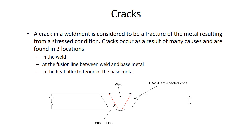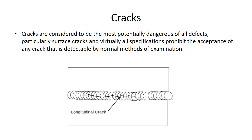A crack in a weldment is considered to be a fracture of the metal resulting from a stress condition. Cracks occur as the result of many causes and are found in three locations: in the weld, at the fusion line between the weld and the base metal, and in the heat affected zone of the base metal. The heat affected zone is the portion of the base metal that has been affected metallurgically and mechanically by the heat introduced from welding. Cracks are considered to be the most potentially dangerous of all defects, particularly surface cracks, and virtually all specifications prohibit the acceptance of any crack detectable by normal methods of examination.